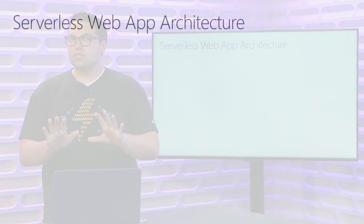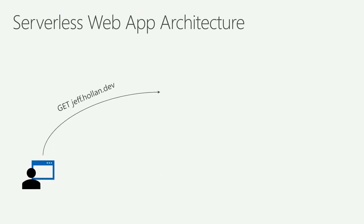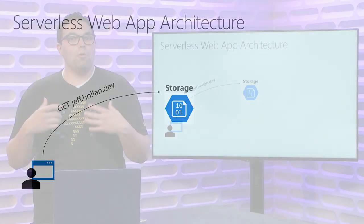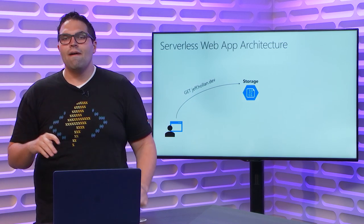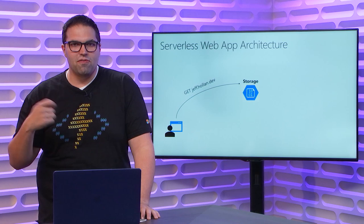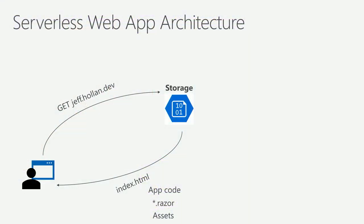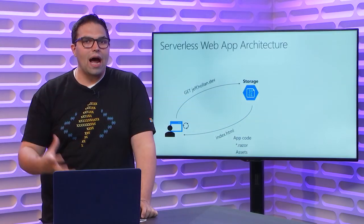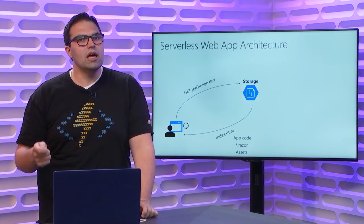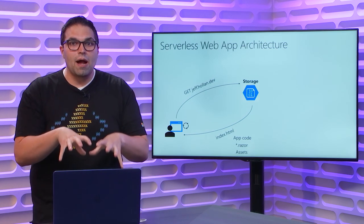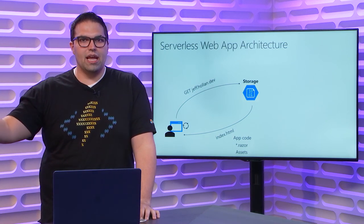Now let's talk about a serverless web app architecture. It starts the same — you have a user in a browser who wants to go to jeff.holland.dev. But in this case, instead of hitting a server, they just hit some files in storage, pulling directly from a storage account. The storage account returns back an index.html page and some code that needs to be rendered on the browser. Since there's no server rendering the page, I'm relying on the browser to render it. All of the code, all of the logic to draw and update elements, now runs on my browser, because I just have a storage account with static assets.